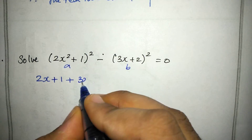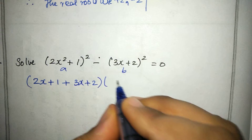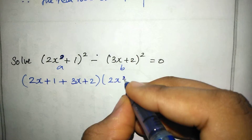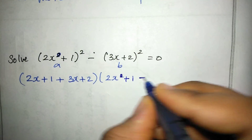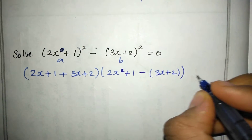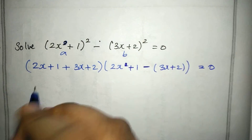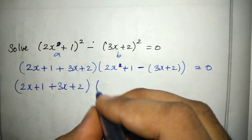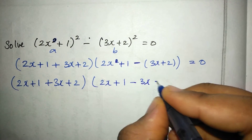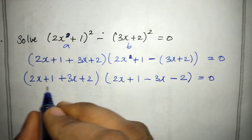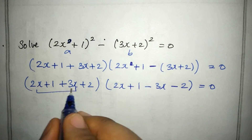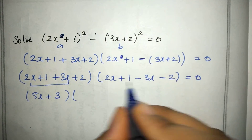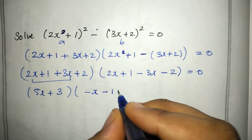Applying the formula, a + b gives (2x² + 1) + (3x + 2) = 2x² + 3x + 3, and a − b gives (2x² + 1) − (3x + 2) = 2x² − 3x − 1. Setting each to zero: 5x + 3 = 0 and −x − 1 = 0.